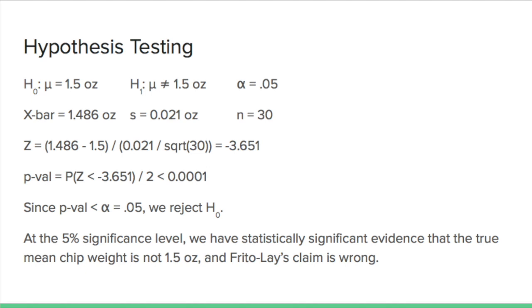We chose to do a Z-test since our sample size was 30. And this was computed to be negative 3.651. And we computed a p-value of less than 0.0001.